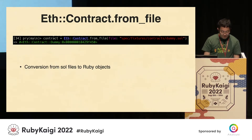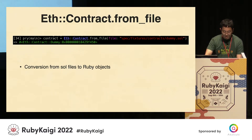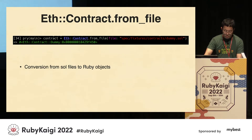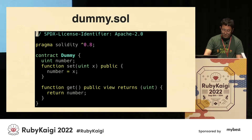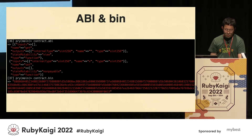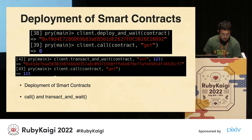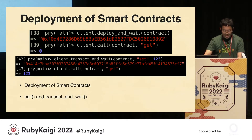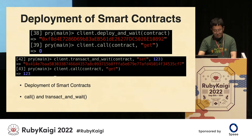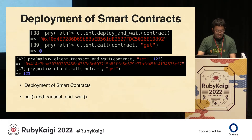In eth.rb, Eth::Contract.from_file allows you to read from a .sol file and map it to a Ruby object. The dummy .sol file looks like this. The dummy .sol file is converted to ABI and binary files. To deploy a smart contract, pass the contract object to the deploy_and_wait method and it is executed. The deployed smart contract is called with the call method or the transact_and_wait method.